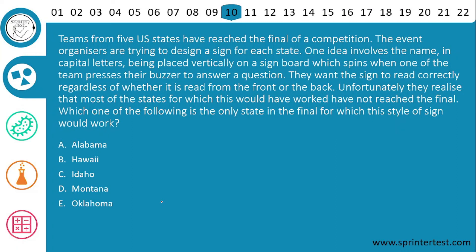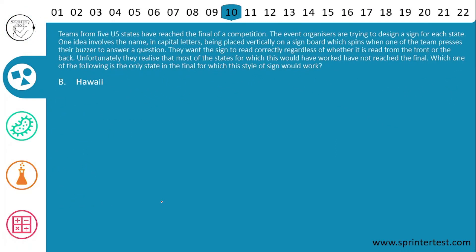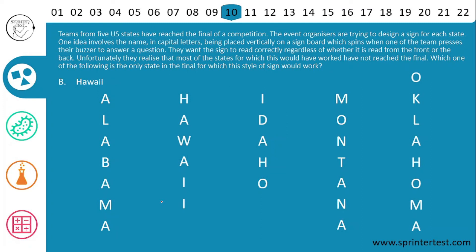The correct answer is B, Hawaii. It's very easy — we write all the given state names vertically. The back view would be a horizontal flip of the name. Letters like L, A, D, N, and K get distorted when flipped. But in Hawaii, all the letters look the same from the front and from the back. So the correct answer is Hawaii.